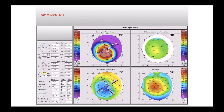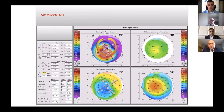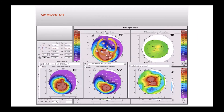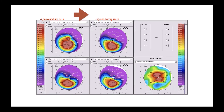For this case, I tried two asymmetric intracorneal ring segments but not the same thickness for both parts. The result was good — the patient was happy because astigmatism went from minus eight to minus one, and the vision was about 10/10. The evolution was very progressive, but the result at the end was very good.